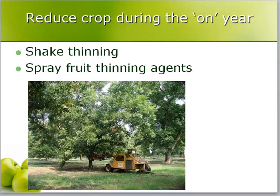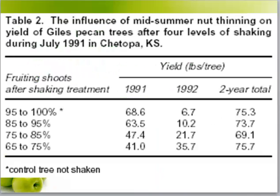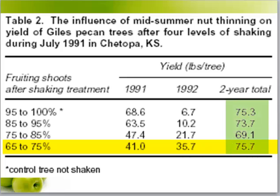Here they are shake thinning pecans. These shake thinning data in pecan show that severity of the shake increases down one column, with yields measured over two years. Severe shaking drops yields markedly during that year; however, yields in the next year are increased. As seen in the two-year totals, shake thinning does not increase or decrease total yields — it just produces more even yields over the years.